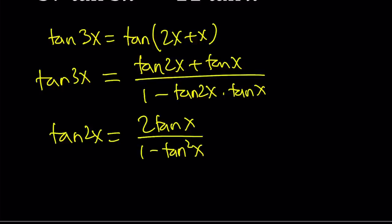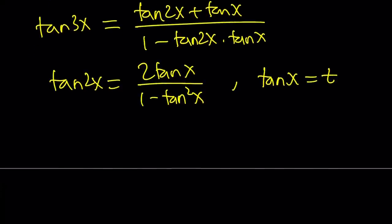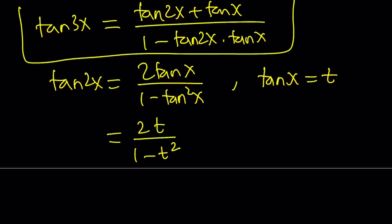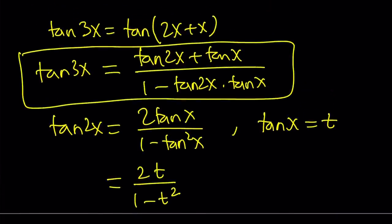This comes from tangent alpha plus beta where you replace both alpha and beta with x. Obviously if tangent x is equal to 1 then we kind of run into a problem because tangent 90 is undefined. Now let's see how we can use substitution a little bit here to make it easier on ourselves. So suppose tangent x is equal to t. And now we can write the following.